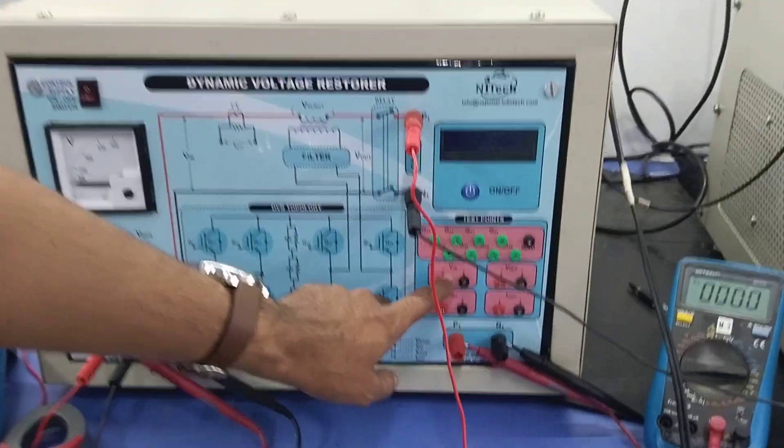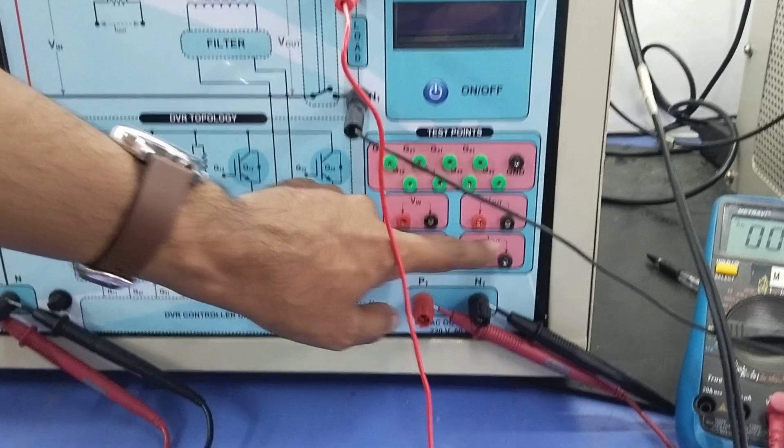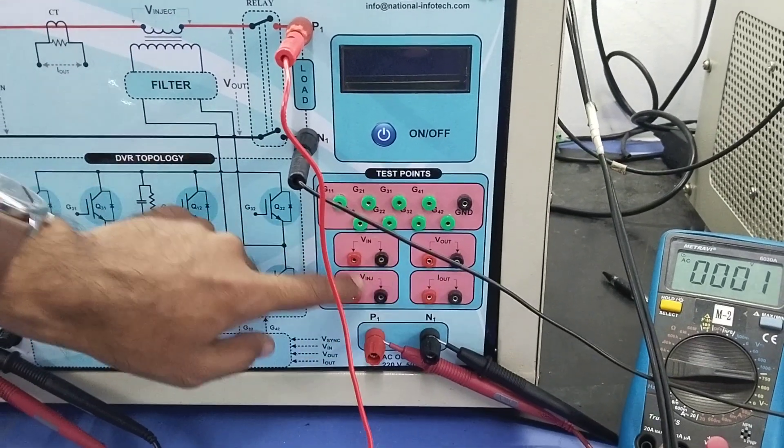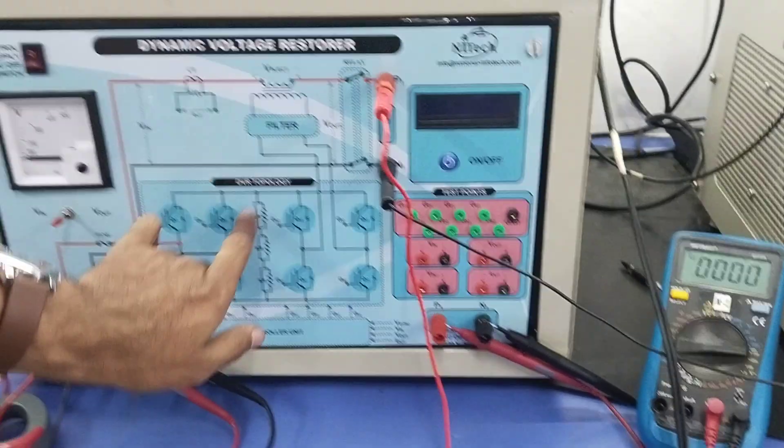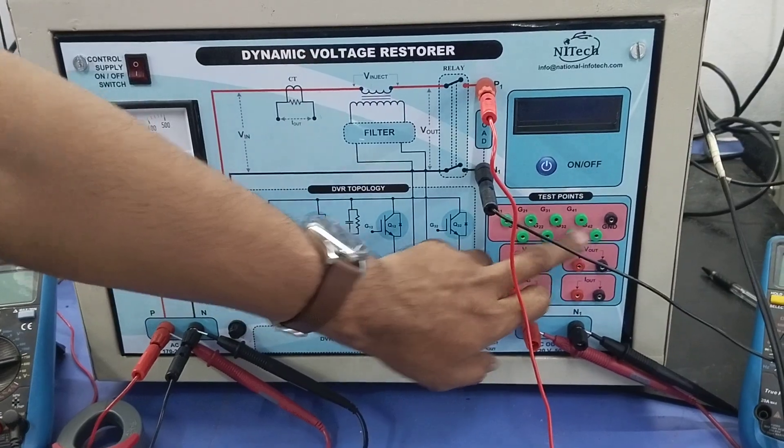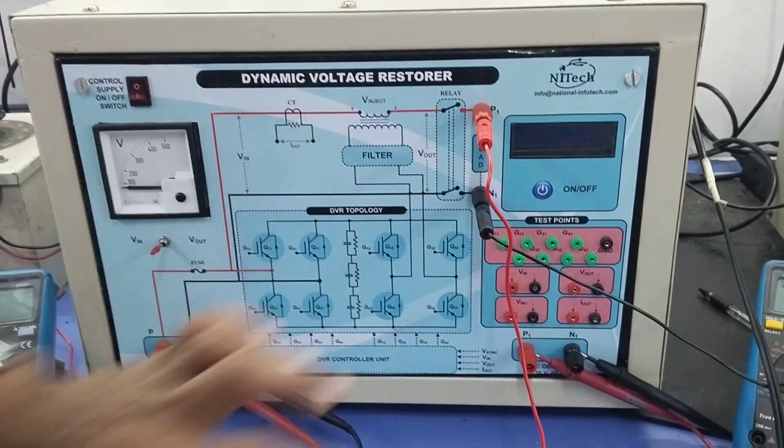Here, V_in, V_out, and V_inject can be observed over the oscilloscope, as well as the gate pulses of this IGBT can also be observed with these terminals.